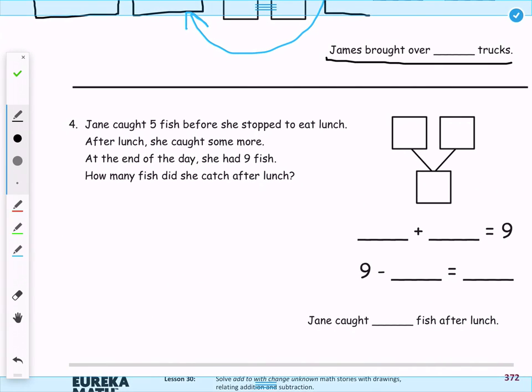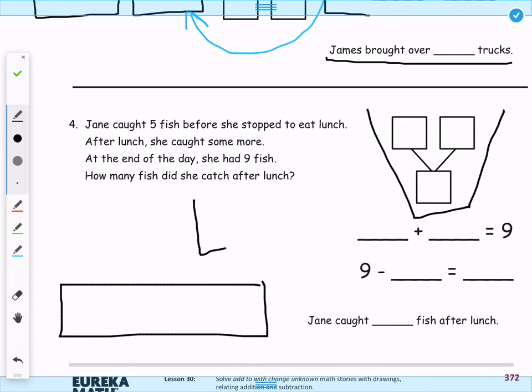Now, this one is exactly the same except once again they flipped the number bond on us like in number two, so all we need to do is flip our number bond as well. So we're going to simply draw an upside down number bond, nothing too scary, and then take the numbers from here and plug them in.